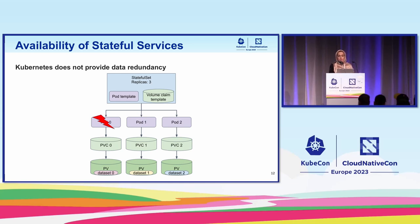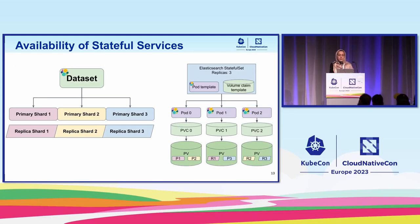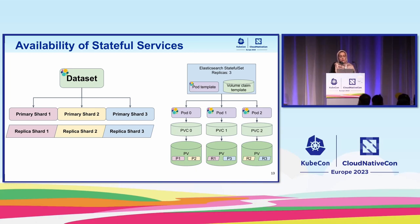Although we have redundancy for the pods, we don't have any redundancy for the data stored on the disks. So the lesson learned here is that Kubernetes does not provide data redundancy out of the box — it's up to the application to replicate the data. Taking Elasticsearch as an example, the data stored is sharded by Elasticsearch and each primary shard can have multiple replicas. Elasticsearch distributes the primary and replica shards across disks so that if one disk fails, there is at least one disk with a copy of the data able to provide the same service.